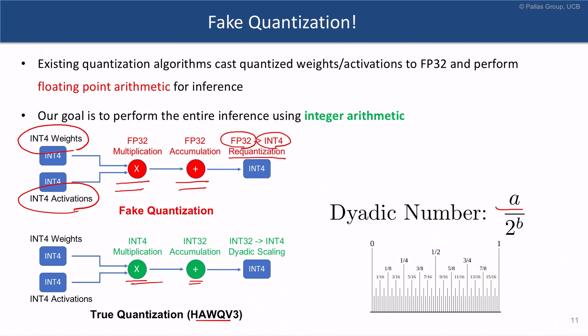For example, 3 over 16. We enforce this dyadic scaling to have a rational number where the numerator is at most an int-16 number, so that when we are performing the scaling, we only need to perform low precision integer multiplication and bit shifting.